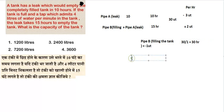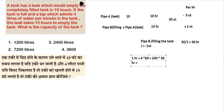We know that pipe B fills 4 liters per minute. In one hour that is 4 into 60 = 240 liters per hour. We have 30 hours, so 240 multiplied by 30 = 7200 liters. The correct answer is 7200 liters — that is the capacity of the tank.